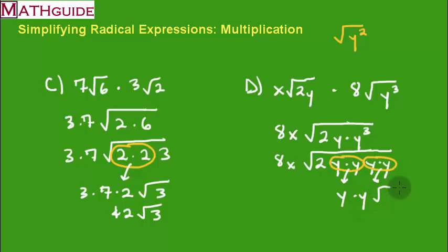What's left underneath the square root? This 2. And I still have this 8 and the x on the outside. So what's the final answer? 8x. And we've got y times y, which is y squared. And I have the radical 2 still inside there. Those are intermediate level problems.